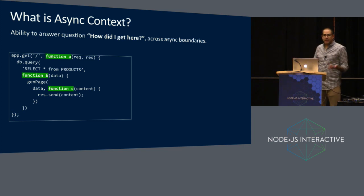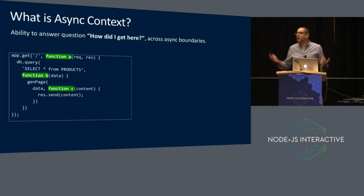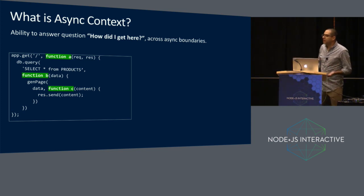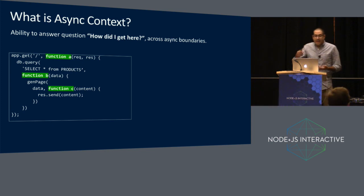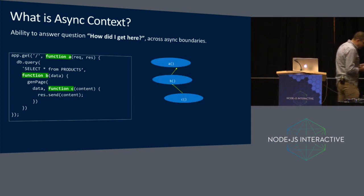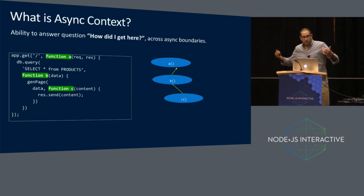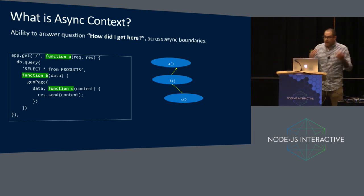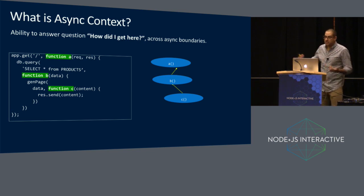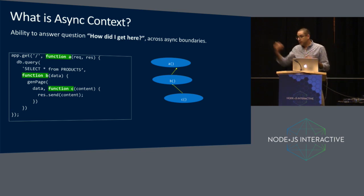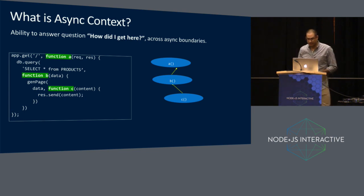When function B gets invoked, it calls gen page and passes in a callback function C. If you were to think about this intuitively and start to draw a picture of the relationship between A, B, and C, you might draw something like this. C was scheduled by B, so you draw an arrow from C to B, and B was scheduled or enqueued by A, so you draw an arrow there.